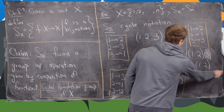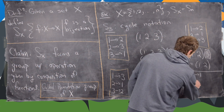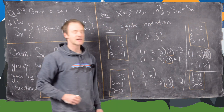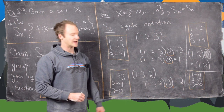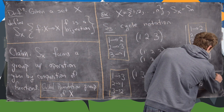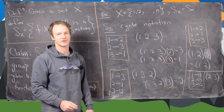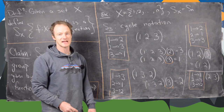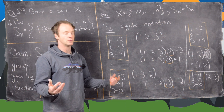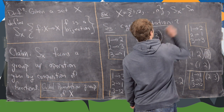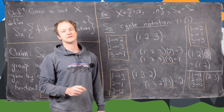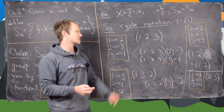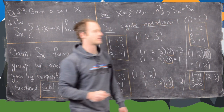Let's look at one more: 1 goes to itself, 2 to 3, and 3 back to 2. Since 1 is fixed, we don't include it. We just write the cycle (2 3), and notice that 1 is fixed by this cycle. As for the identity — since everything is fixed, you can either write (1) to indicate it's fixing everything, or write a pair of empty parentheses. Both mean the same thing.